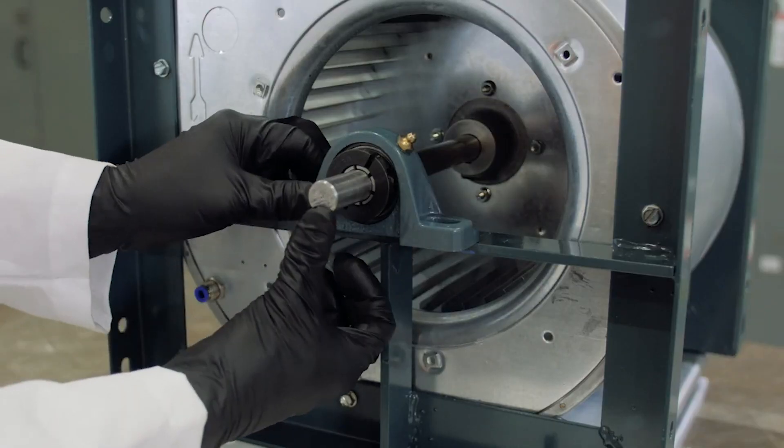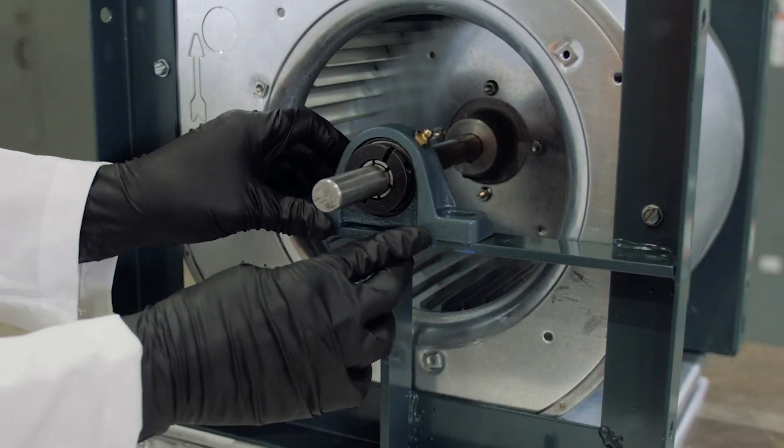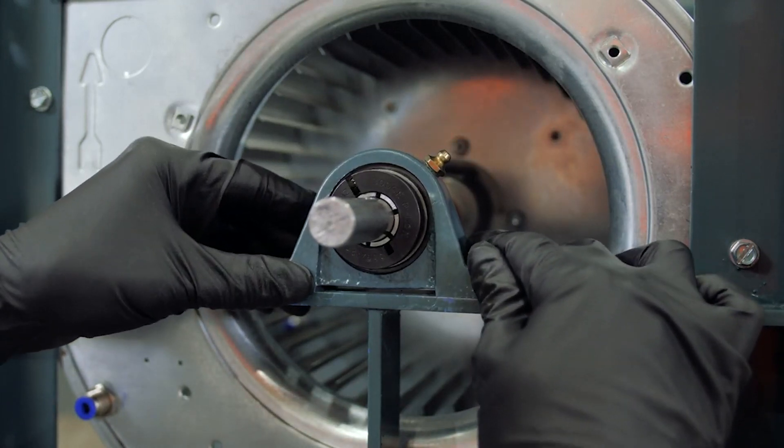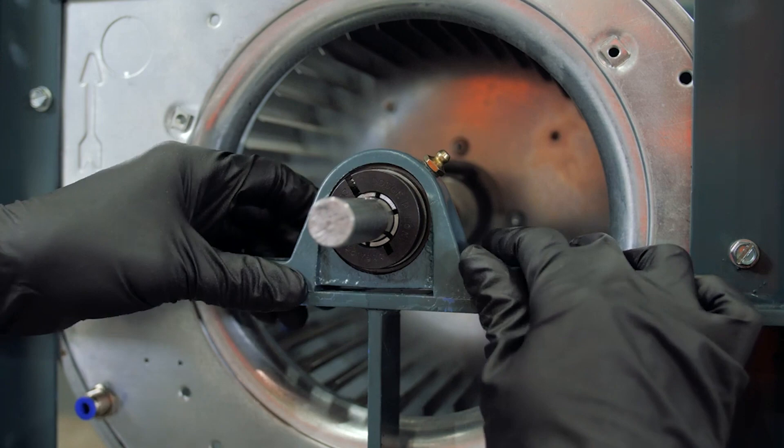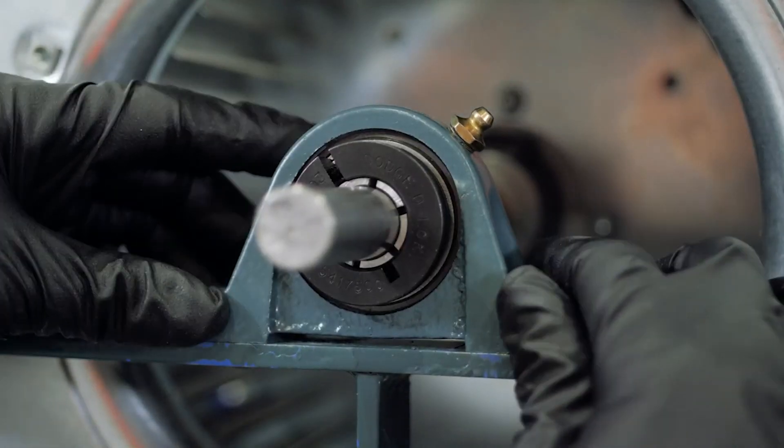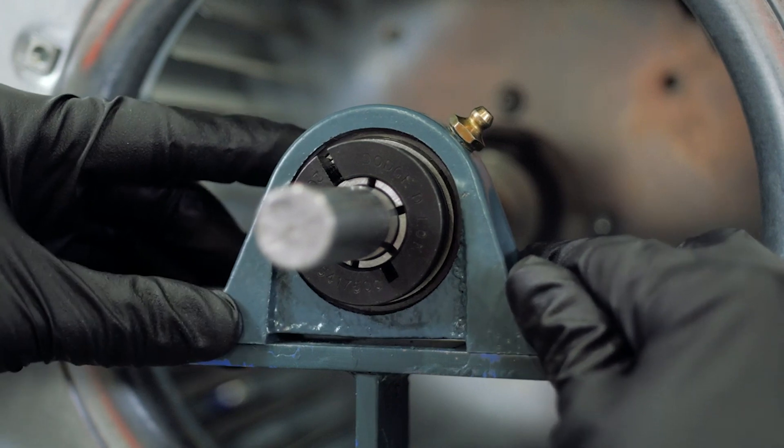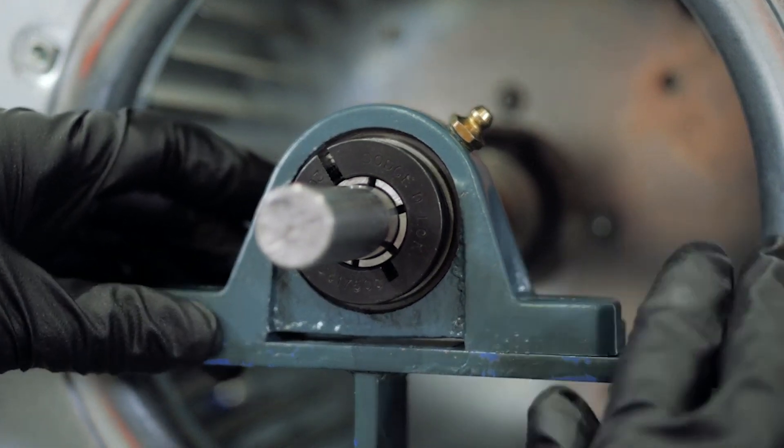Proper alignment is important to maximize the life of the bearing. Dodge ball bearings are rated for plus or minus two degrees of static misalignment. A bearing may be aligned using the shaft to position the insert relative to the housing or by fixing the insert to the shaft and adjusting the housing.